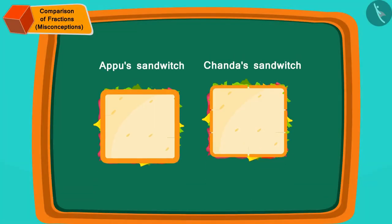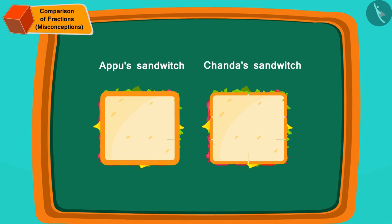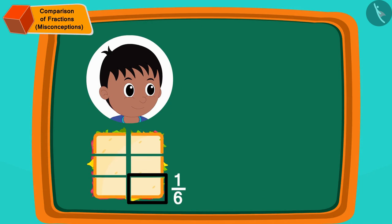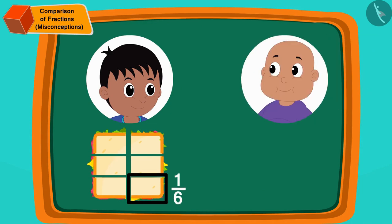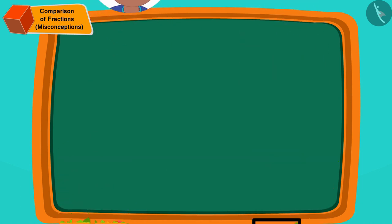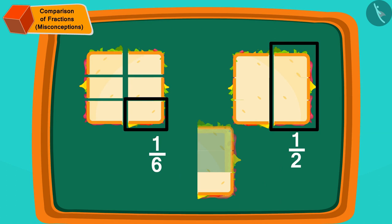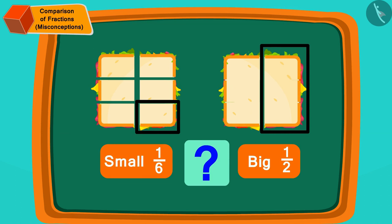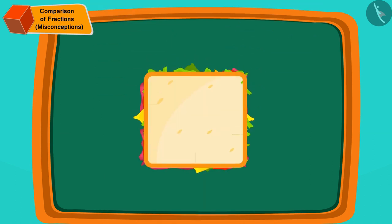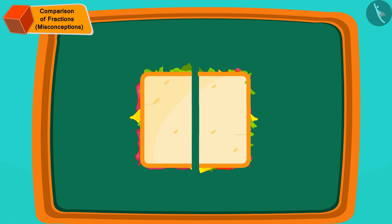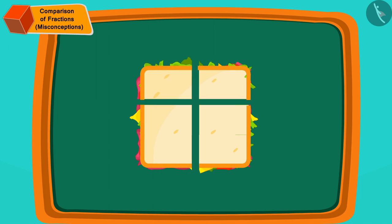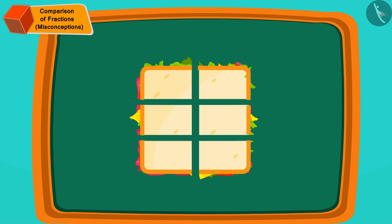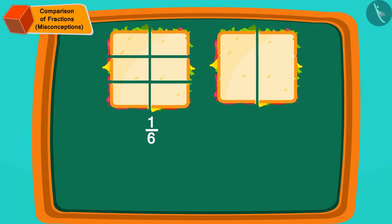Appu and Chanda's sandwiches are exactly the same size. Rajoo got one-sixth part of the sandwich and Babloo got one-half part. If we put Rajoo's piece on Babloo's piece, we will find that Rajoo's piece is actually much smaller than Babloo's piece. But why did it happen? Children, if we divide any object into equal parts, as we increase the total number of parts, they become smaller and smaller.